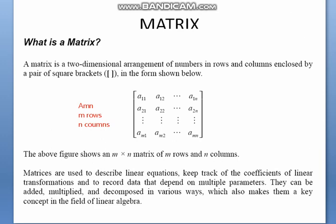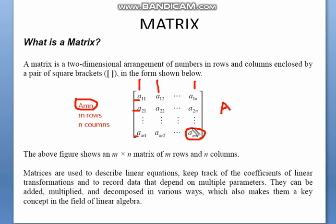When we talk about a matrix, this matrix has to follow a certain order. Suppose we have matrix A, written as A_mn. Here m represents the total number of rows and n represents the total number of columns. So we write it as A_mn — a matrix with m number of rows and n number of columns. Always remember: the first one represents the rows and the second one represents the number of columns.